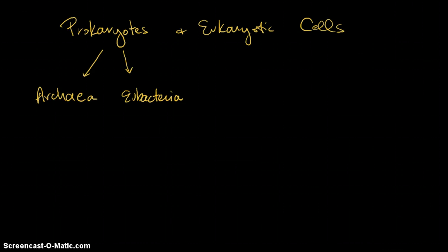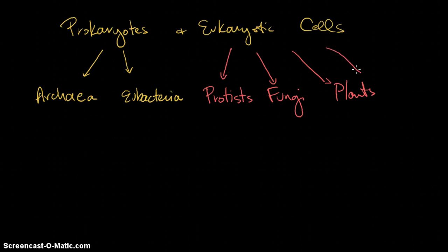For our eukaryotic cells, we had several other kingdoms. We had the protists, we had the fungi, we have the plants, and the animals. So all of these have different kinds of cells, and really what we're going to focus on first is comparing prokaryotes to eukaryotes, and then secondly, plants to animals.